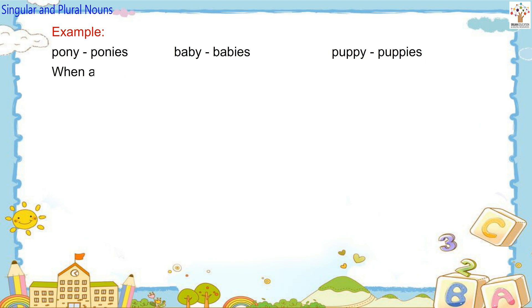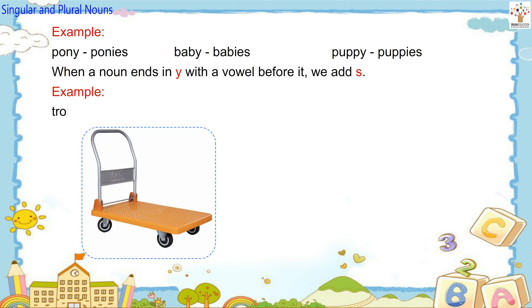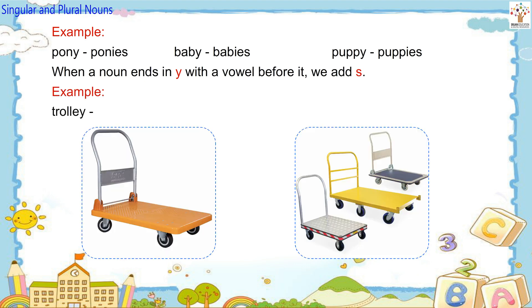When a noun ends in Y with a vowel before it, we add S. Example: Trolley — Trolleys.